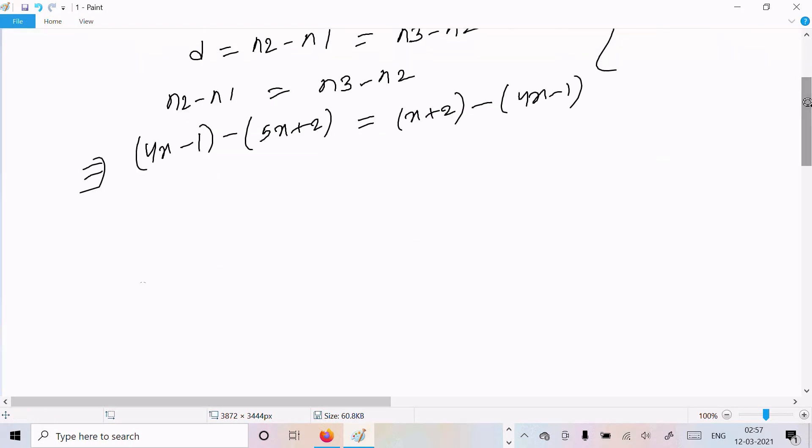Now here after simplifying: 4x minus 1 minus 5x minus 2 equals x plus 2 minus 4x plus 1. So 4x minus 5x, that comes minus x, minus 1 minus 2 is minus 3. x minus 4x is minus 3x, 2 plus 1 is 3.